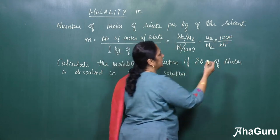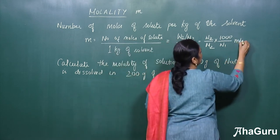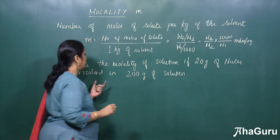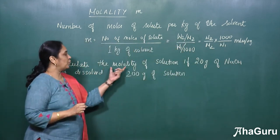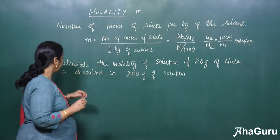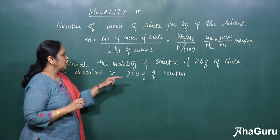The unit of molality is moles per kg. Now we will do a numerical based on this. Calculate the molality of solution if 20 grams of sodium hydroxide is dissolved in 200 grams of solution.